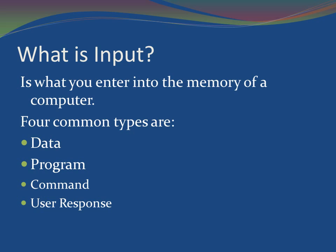Data is a collection of unprocessed items. A computer manipulates and processes data into useful information such as words, numbers, pictures, and sounds. A program is a series of instructions that tells a computer how to perform the tasks necessary to process data into information. A command is an instruction given to a computer program; commands can be issued by typing keywords or pressing special keys on the keyboard. Sometimes a program asks a question such as 'Do you want to save the changes you made?' and based on your response, the program performs specific actions.